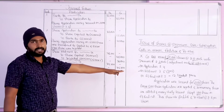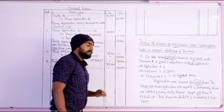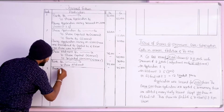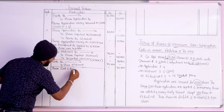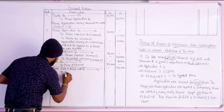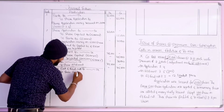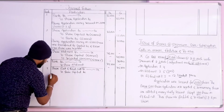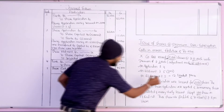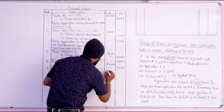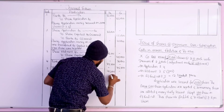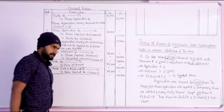First and final call money: due entry is Share first and final call account debit, to share capital account credit. Narration: first and final call money due on 15,000 shares at rupees 3 each. So 15,000 into 3 equals 45,000 rupees debit and 45,000 rupees credit.